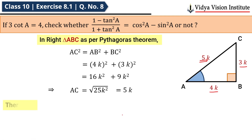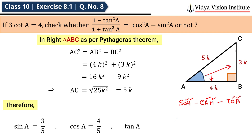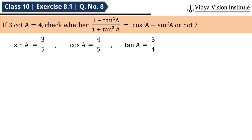Now we have all three sides of the triangle in terms of ratio. So sin A, cos A values can be calculated. We now have all three trigonometric ratio values. We will substitute them into the left-hand side and right-hand side separately and check whether LHS equals RHS.